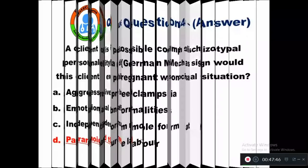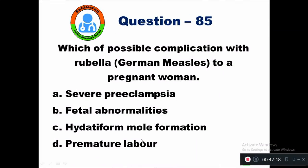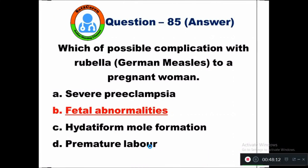Question 85: Which possible complication does rubella — German measles — pose to a pregnant woman? Option A severe preeclampsia, B fetal abnormalities, C hydatidiform mole formation, D premature labor. The right answer is fetal abnormalities.